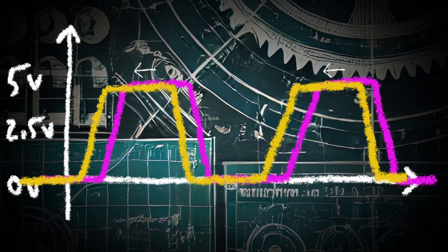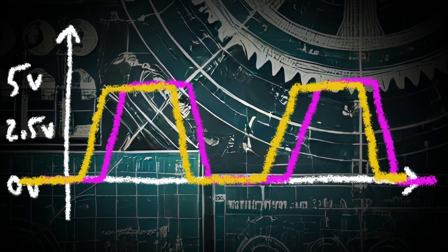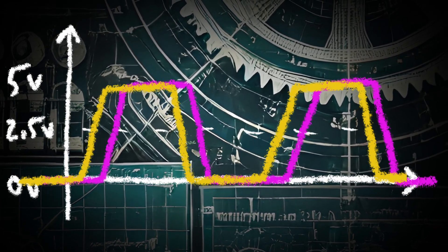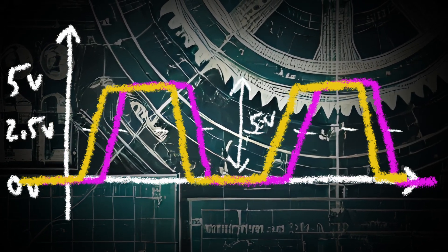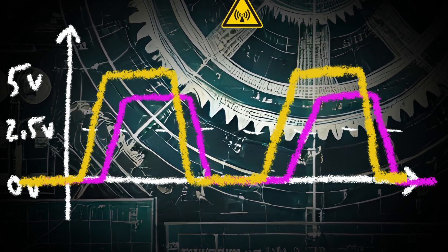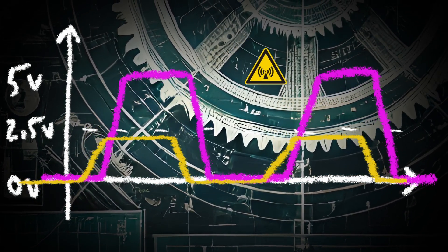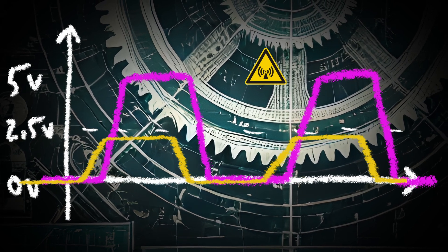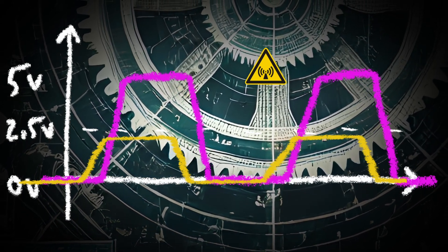For the signal to be registered as a pulse, the voltage needs to be roughly over half of the peak level. This works just fine until we get some electromagnetic noise. The top of the pulse could drop below the halfway point and the pulse will no longer be registered.